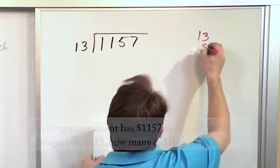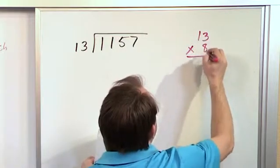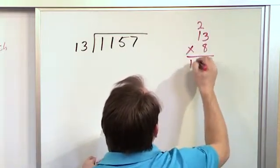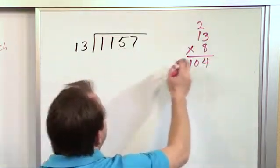Let's do 13 times 8, just to try it out. 8 times 3 is 24. Put the 4, carry the 2. 8 times 1 is 8, plus 2 is 10. So that's 104. That's not terribly close to that, but it's pretty close.